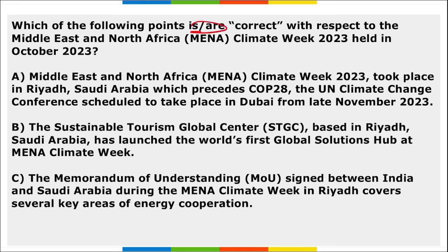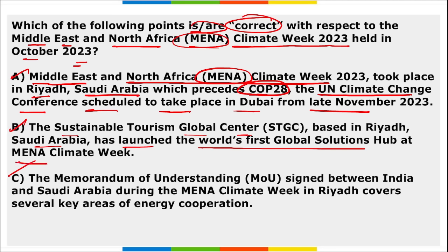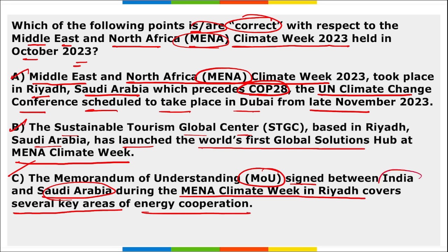Next, which among the following are correct with respect to the Middle East and North Africa (MENA) Climate Week 2023 held in October? All three options are correct. MENA Climate Week took place in Riyadh, Saudi Arabia, preceding COP28 — the UN Climate Change Conference scheduled in Dubai from late November. The Sustainable Tourism Global Center based in Riyadh launched the world's first global solution hub at MENA Climate Week. The MOU signed between India and Saudi Arabia during MENA Climate Week covers several key areas of energy cooperation.